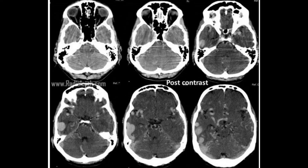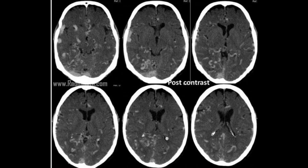No such vascular connections are detected in the circle of Willis. MCAs and basilar artery are visualized. The thalami, basal ganglia, and brainstem appear unremarkable.